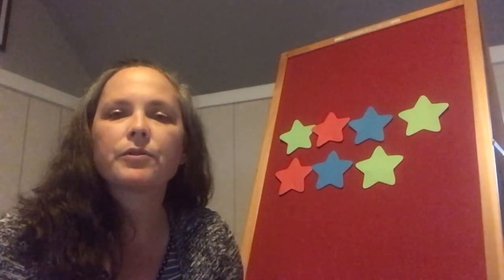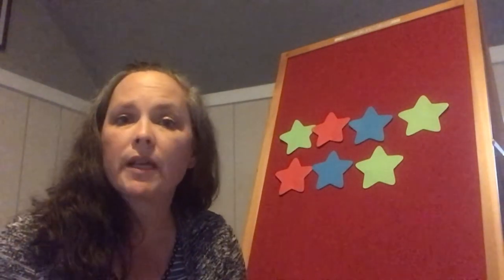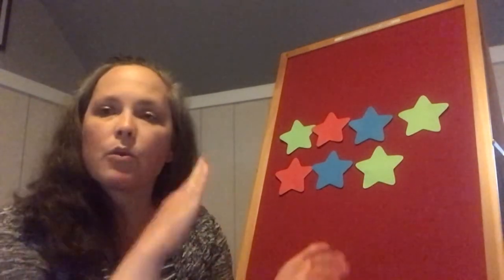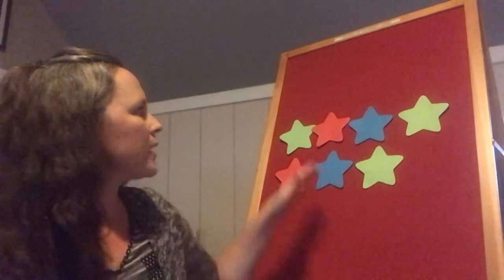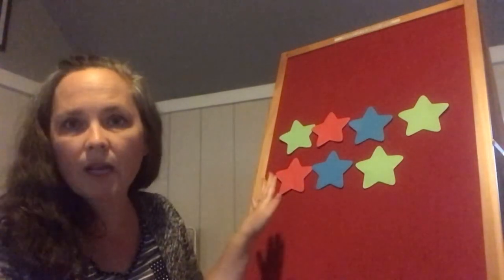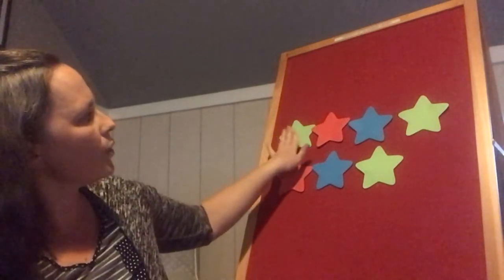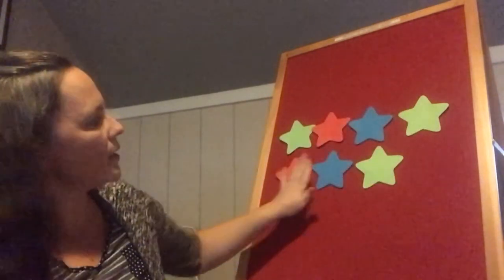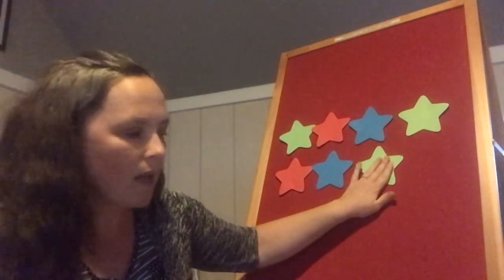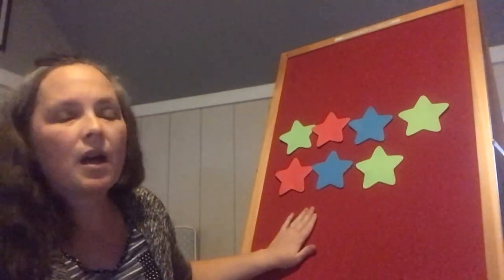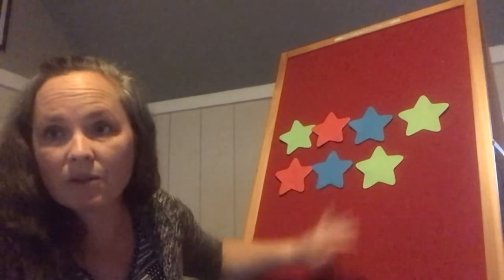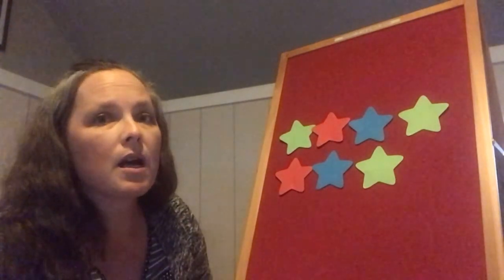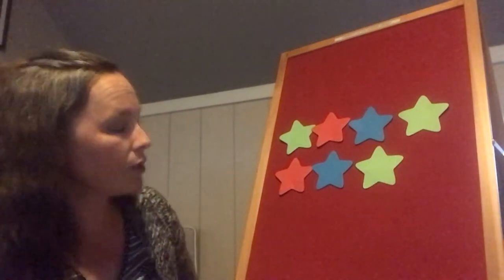Let's now talk about patterns. I see this as closely related to making predictions because you're looking at the way things are and figuring out the way it should continue or what will happen. Here we have a really simple one — we're just looking at colors because they're all stars. We've got green, red, blue, green, red, blue, green — what comes next? Hopefully we can figure out red, blue. We could do more colors, add in different types of shapes, and create patterns that way. You can make it as easy or hard as the kids are ready for.